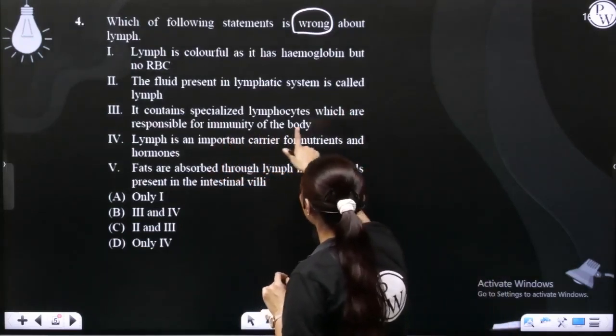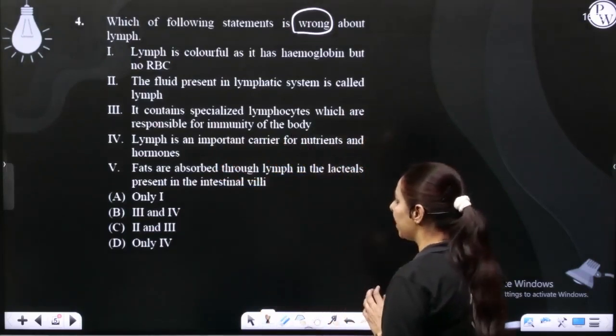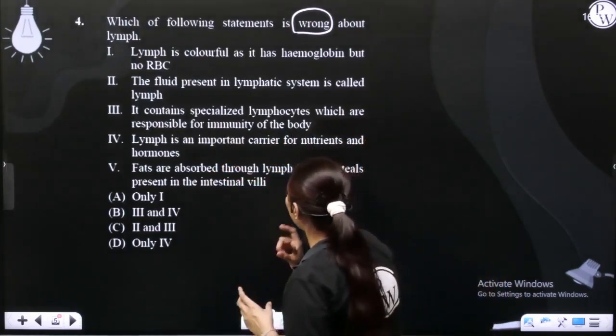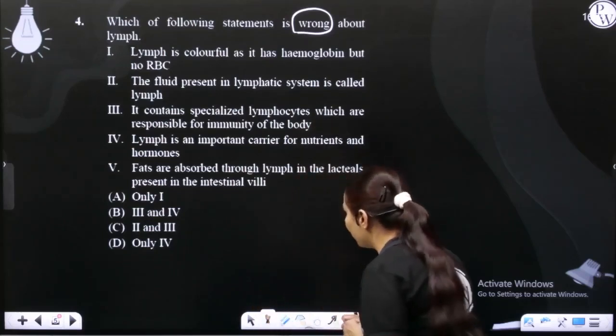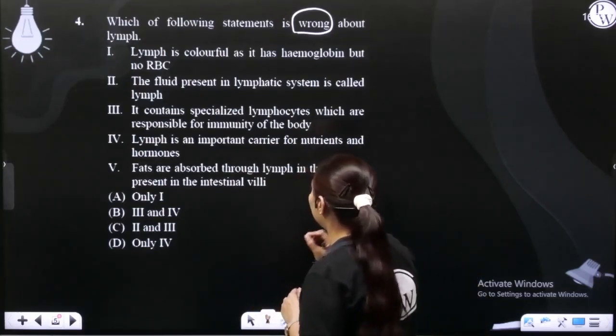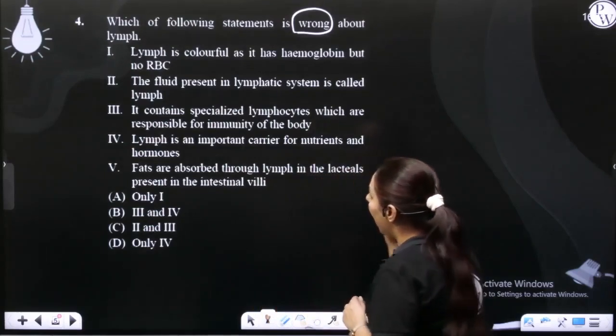Statement 3: It contains specialized lymphocytes which are responsible for immunity of the body. Statement 4: Lymph is an important carrier for nutrients and hormones. Statement 5: Fats are absorbed through lymph in the lacteals present in the intestinal villi.